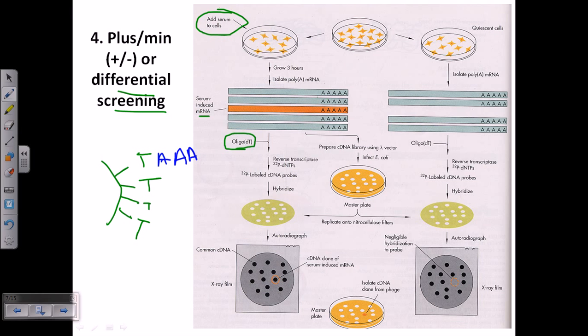Then we take out this particular column and what we do is utilize reverse transcriptase enzyme along with the P32 labeled dNTPs. So all the dNTPs that we utilize here is P32 labeled, and reverse transcriptase will start to produce the complementary DNA from this existing mRNA. So we are talking about the cDNA library. So cDNA libraries are made like that. We make cDNAs which are already P32 labeled.